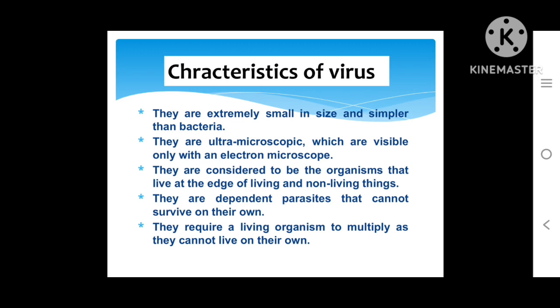Now let's discuss the characteristics of viruses. As mentioned, they are extremely small in size and simpler than bacteria. They cannot be seen under a light microscope, so an electron microscope is required. They are considered organisms that live at the boundary of living and non-living things. They are obligate parasites and cannot survive on their own — they always need a host or living organism to multiply.